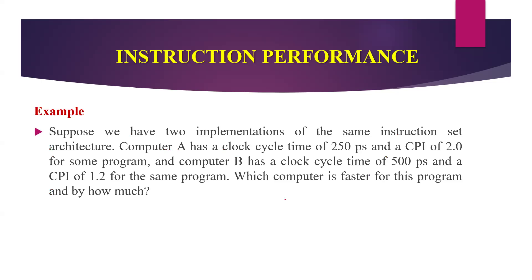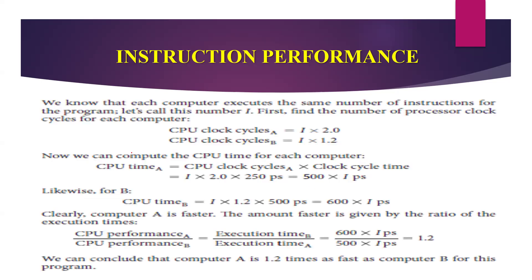Today we have an example. Suppose we have two implementations of the same instruction set architecture. Computer A has a clock cycle time of 250 picoseconds and a CPI of 2.0 for some program. Computer B has a clock cycle time of 500 picoseconds and a CPI of 1.2 for the same program. Which computer is faster for this program and by how much? Each computer executes the same number of instructions for the program — let this number be I.